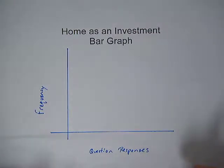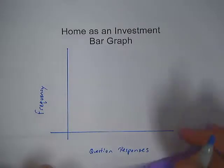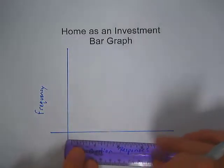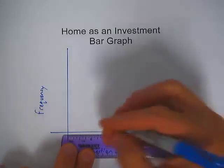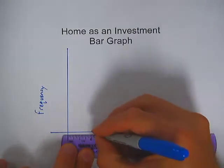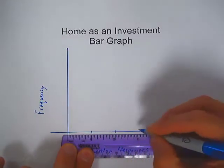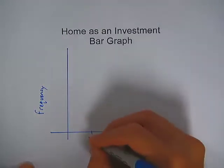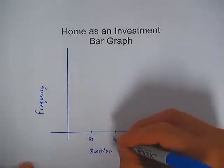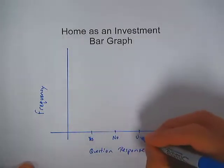The question responses were either yes, no, or undecided. I'm going to space those evenly on the x-axis and put little tick marks for each of the responses. So this first mark represents yes, the second represents no, and the third represents undecided.